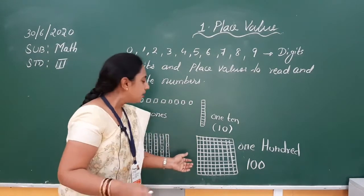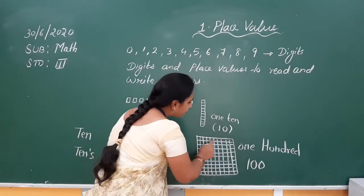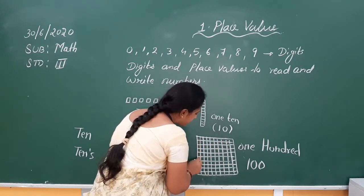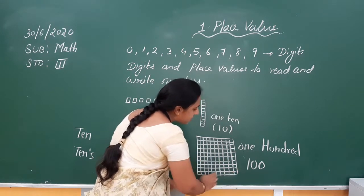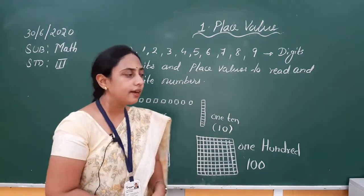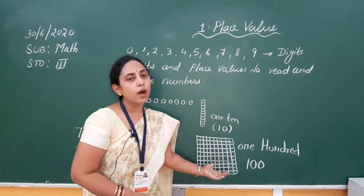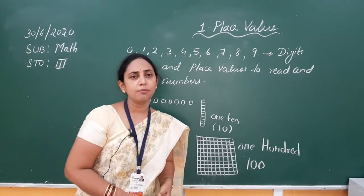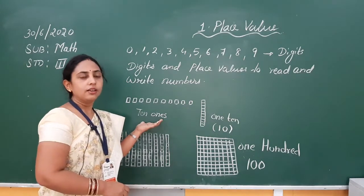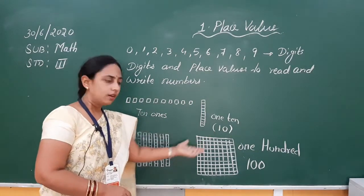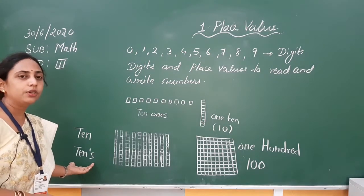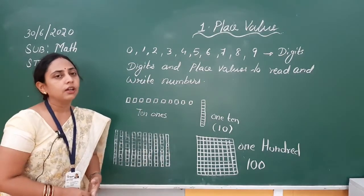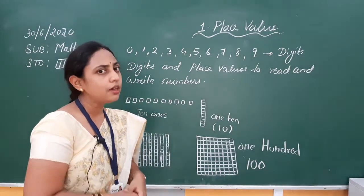If we combine all these blocks, we get 100 total. Ten and ten from both sides means if we combine we get 100. That means 10 tens equals 100, and 10 ones equals 10. In simple multiplication terms: 10 into 1 equals 10, and 10 into 10 equals 100. This is how we represent numbers and their place values.